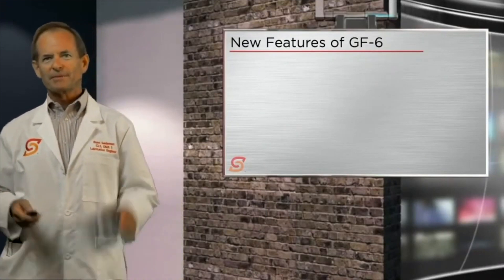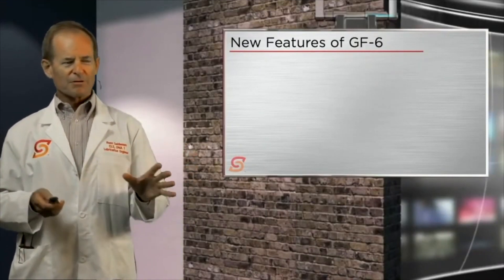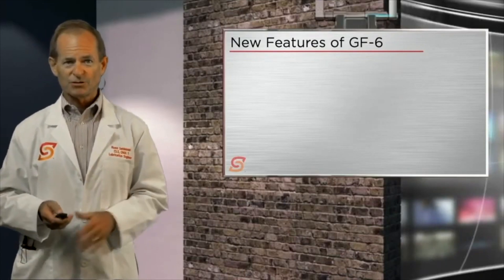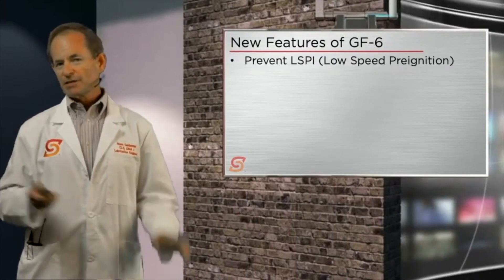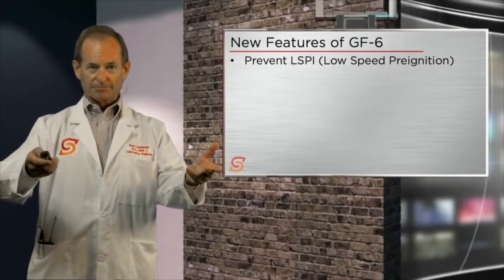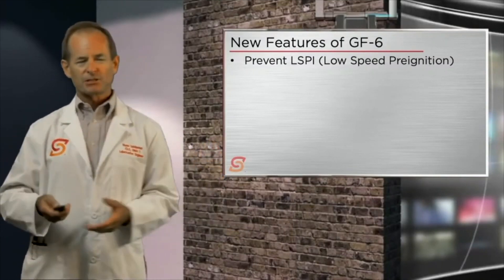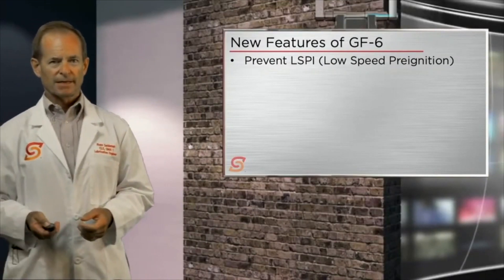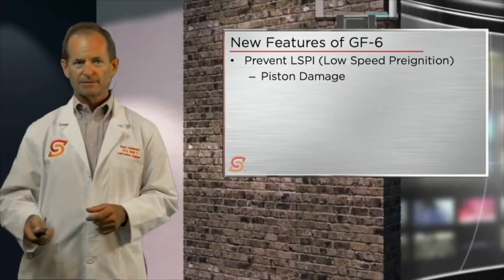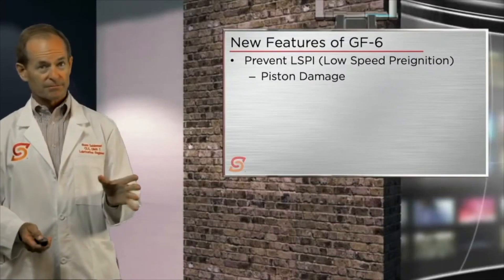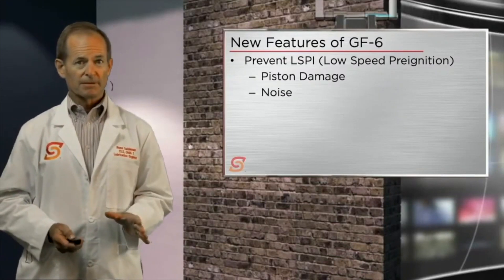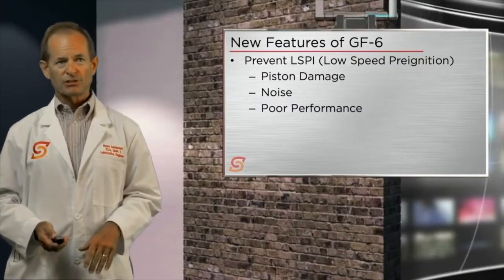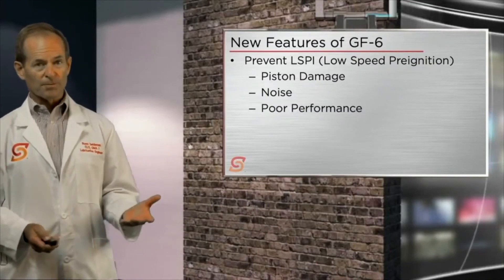We'll go over each of the features of GF6 — the important features. The first, as I've probably been beating into you by now, is to prevent low-speed pre-ignition — prevent LSPI. LSPI is bad, does engine damage, is also very noisy, and results in poor performance like poor acceleration and stumble.